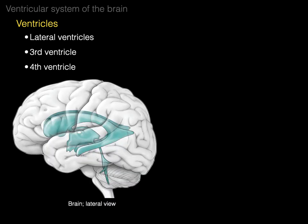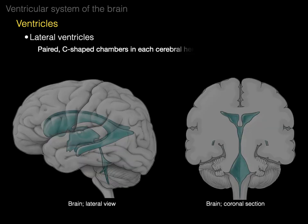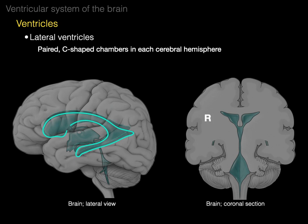Let's talk about each one of those. We're going to do this through a lateral view of the brain, and we've ghosted as if we're Superman looking through and we can see those ventricles from a lateral view. This is the same brain except in a coronal section from an anterior view. The lateral ventricles are paired C-shaped chambers in each cerebral hemisphere — one on the left and one on the right. In the coronal view, there is the lateral ventricle on each side.